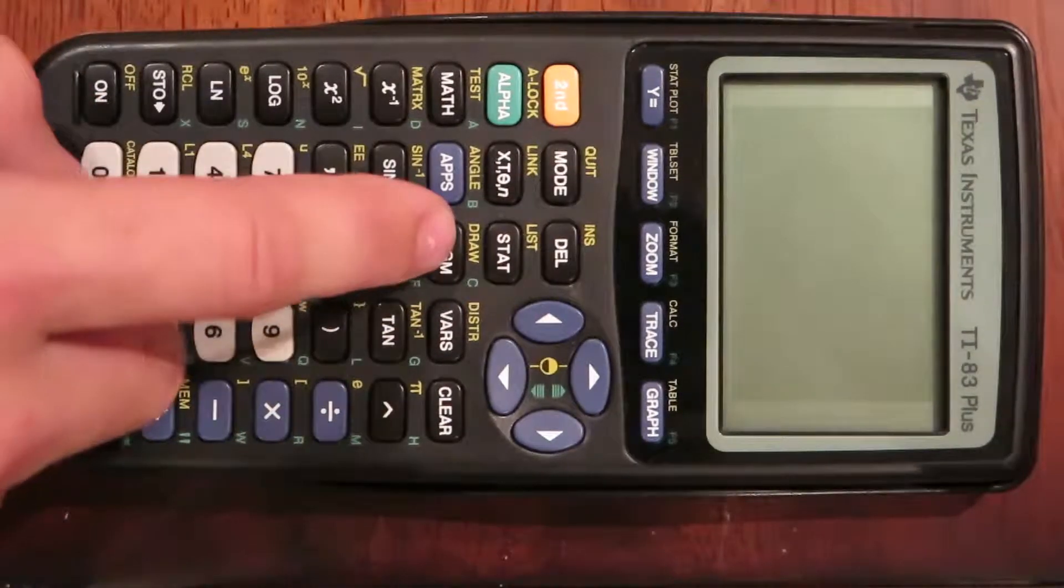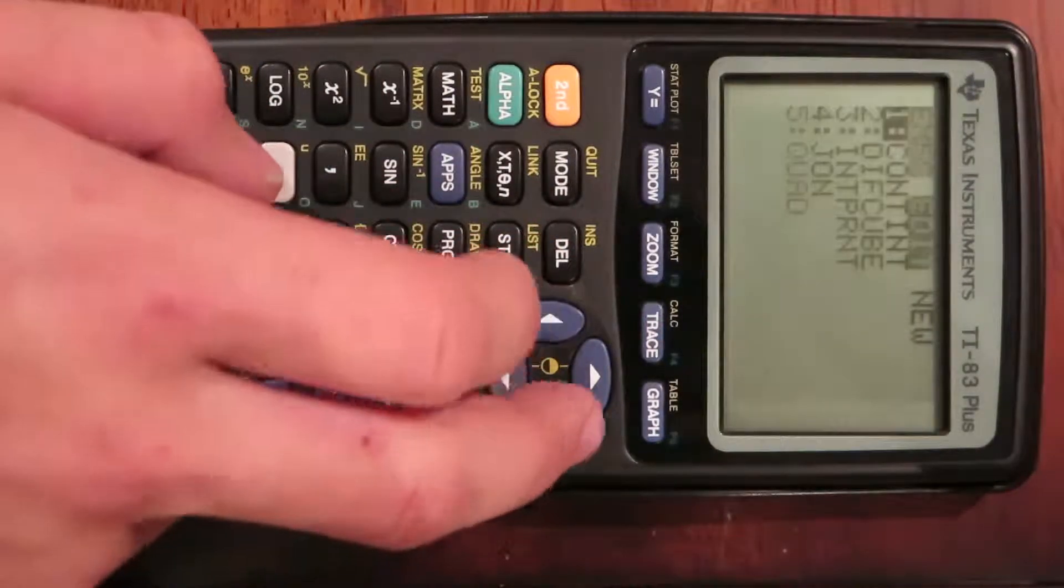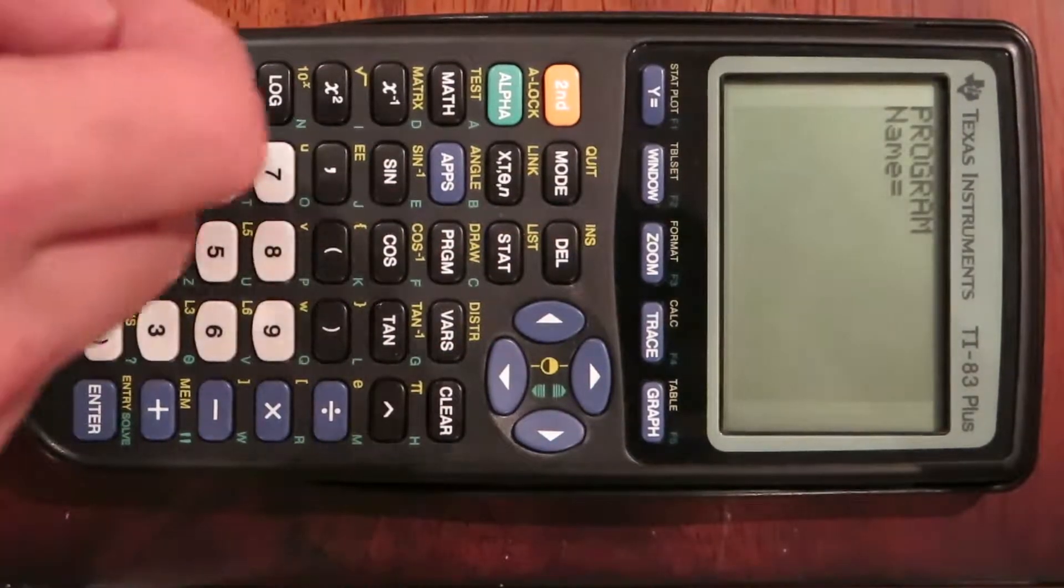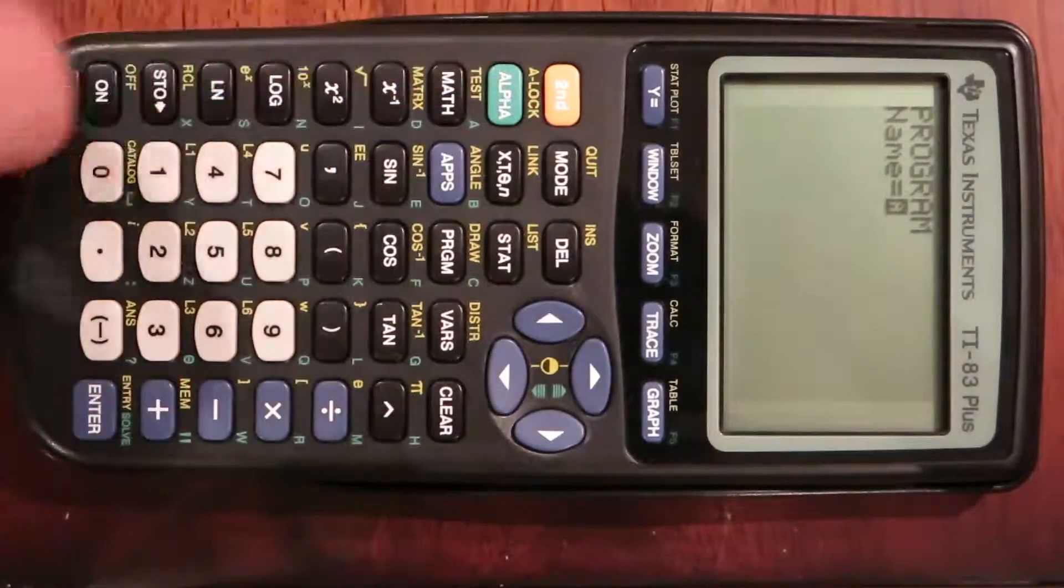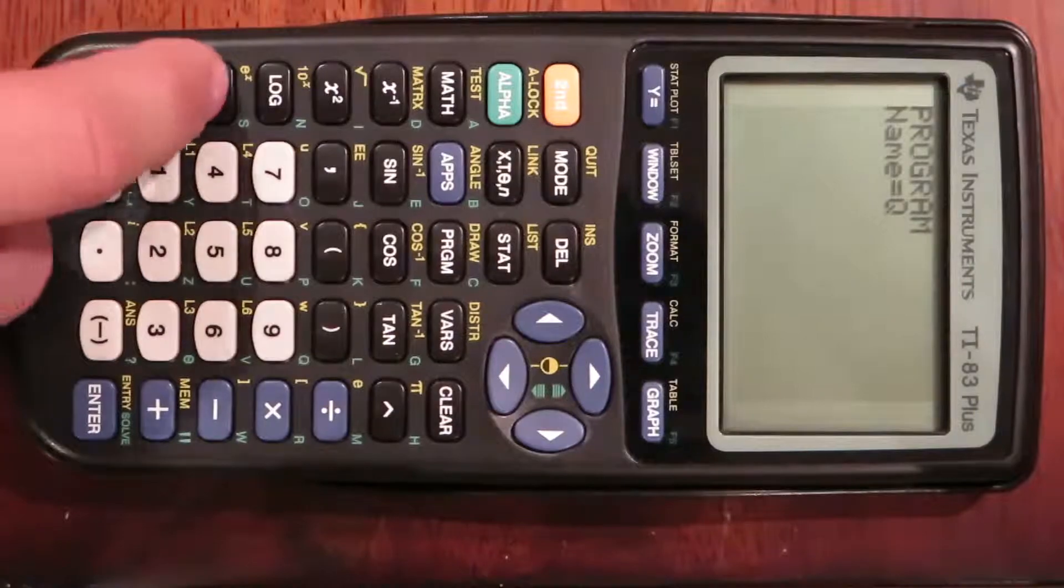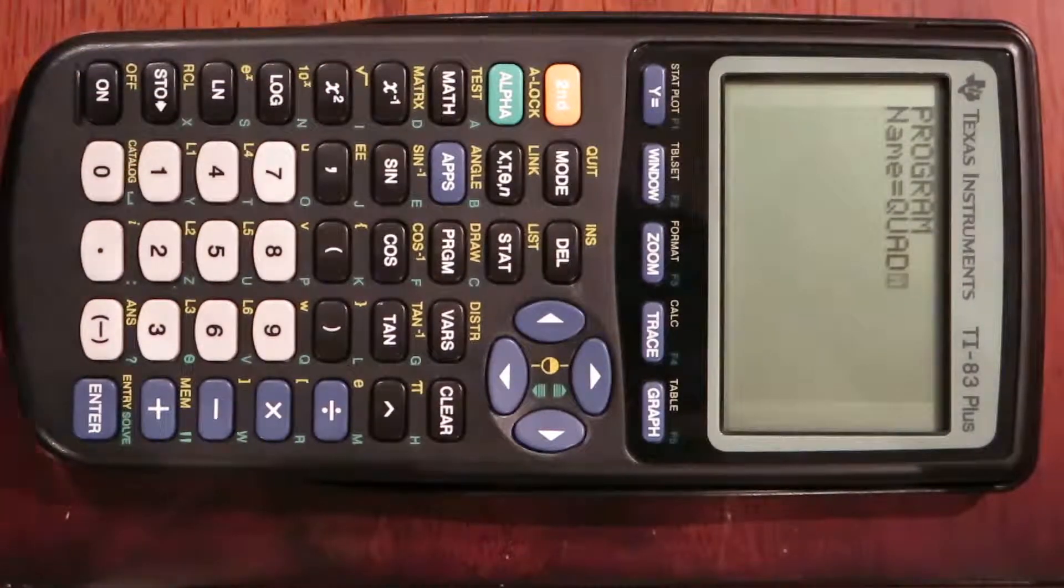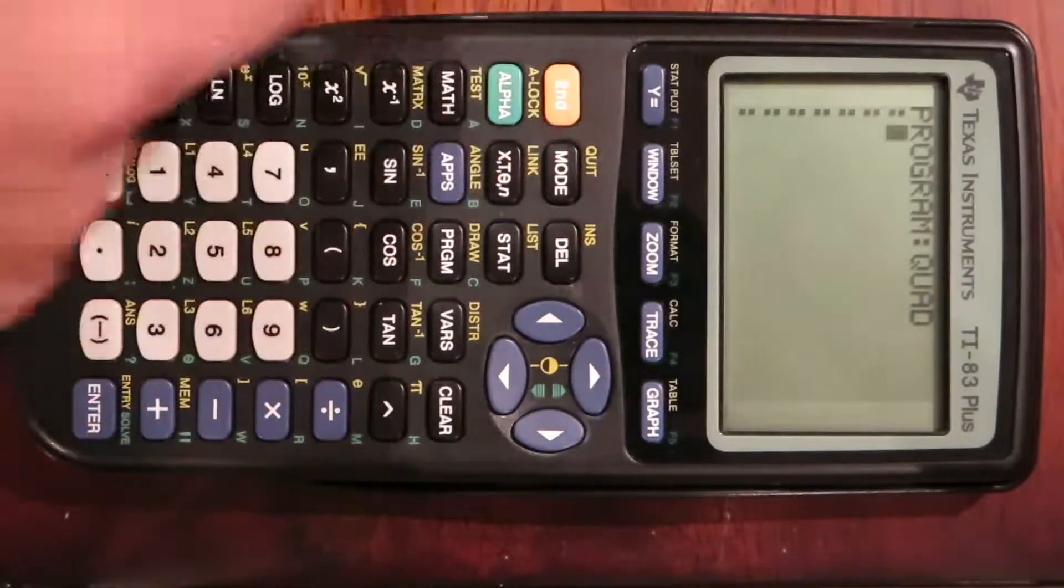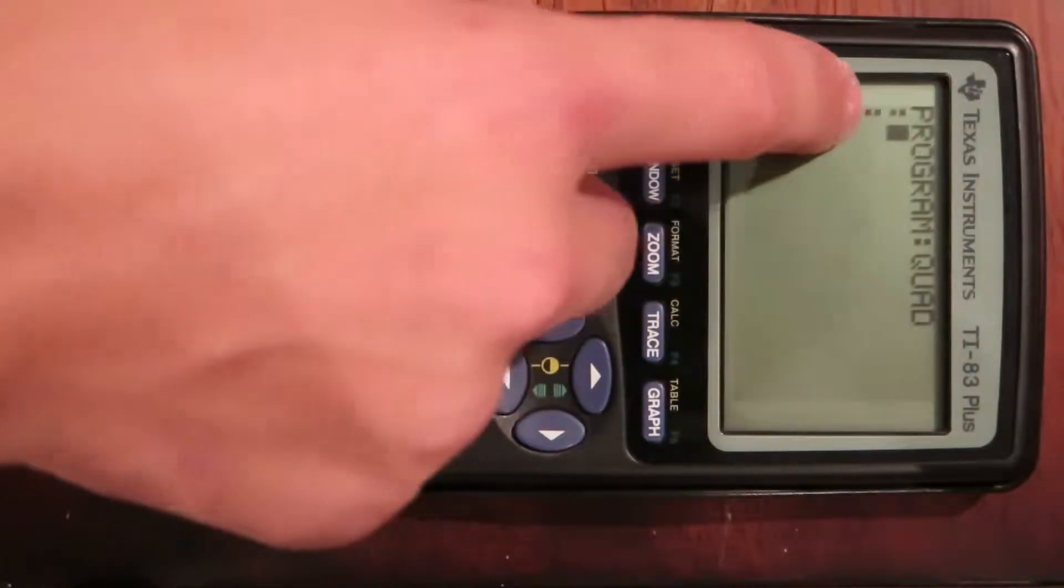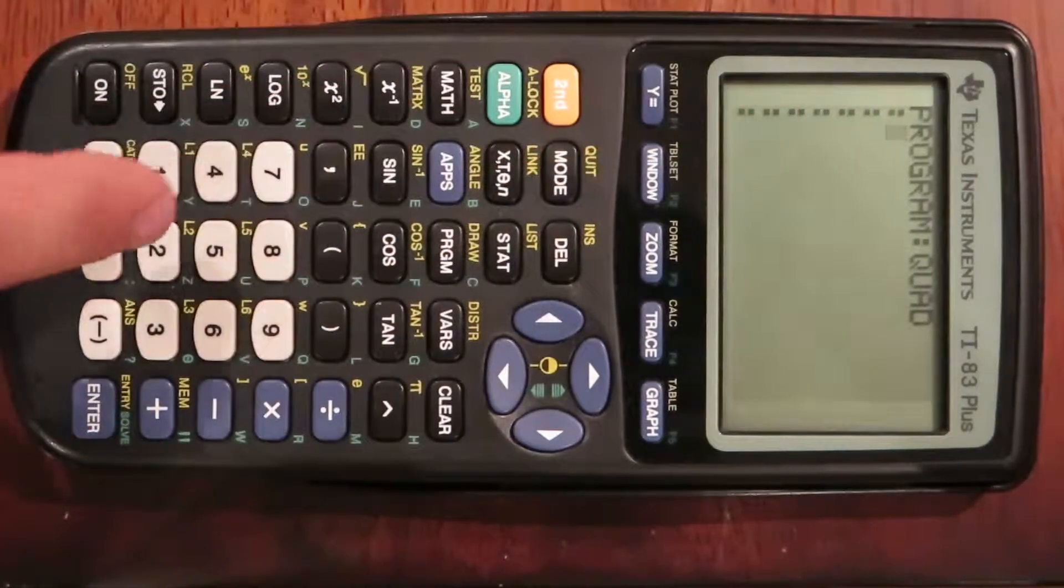We'll start by going to program, which is this button right here, then go to new, enter, second alpha to name it. We're doing the quadratic formula, so Q-U-A-D, press enter. I've already done this, so you can see these dashes, but if you're doing this new you'll just have one dash.